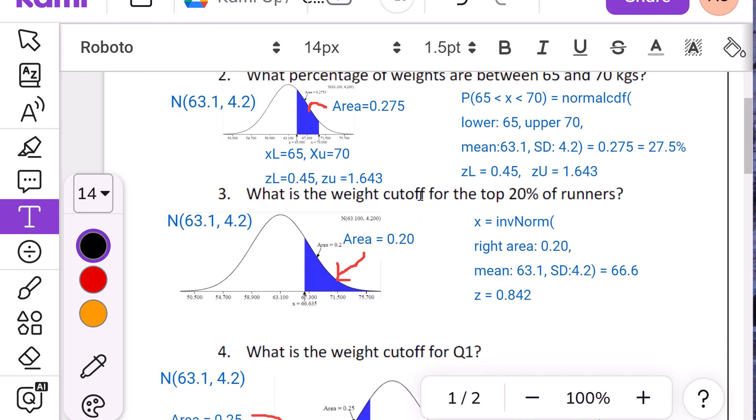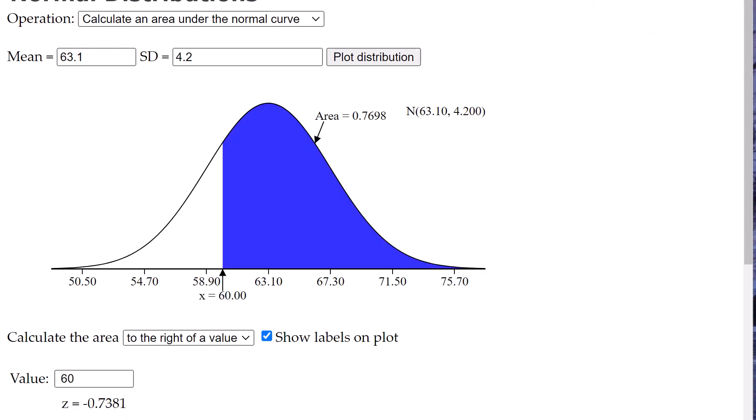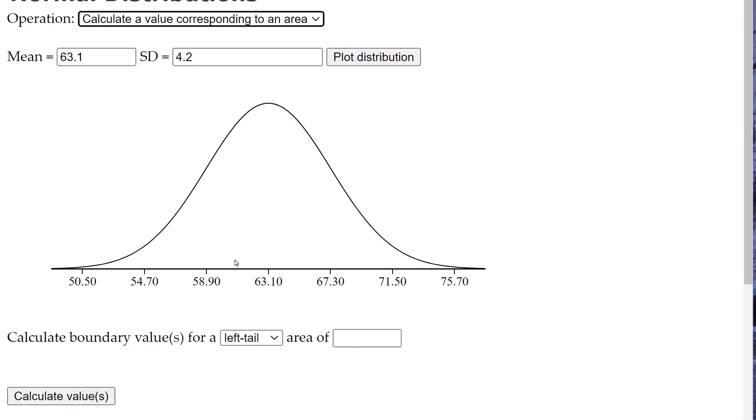What is the weight cutoff for the top 20% of runners? So this one, you don't know the cutoff values. You're trying to find the cutoff value. So first of all, I'll show that to you on the Stapplet. That's basically calculating the value corresponding to an area. And we want the top 20%. So if I put 20, it's going to throw up because it's going to say, I have to have like a decimal area. So I'm going to put 0.2. Now it's happy.